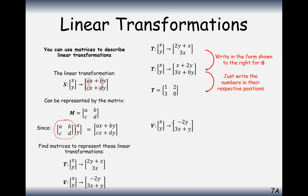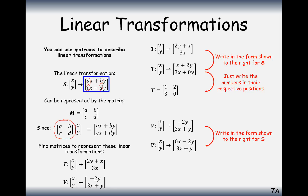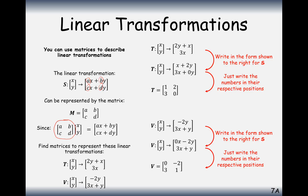For the next transformation, think of it as 0x plus negative 2y on the top row, and 3x plus 1y on the bottom row. Reading off the coefficients: 0 and minus 2 on the top, 3 and 1 on the bottom. Just imagine expanding that matrix with the column vector (x, y) and you'll recover the original transformation.